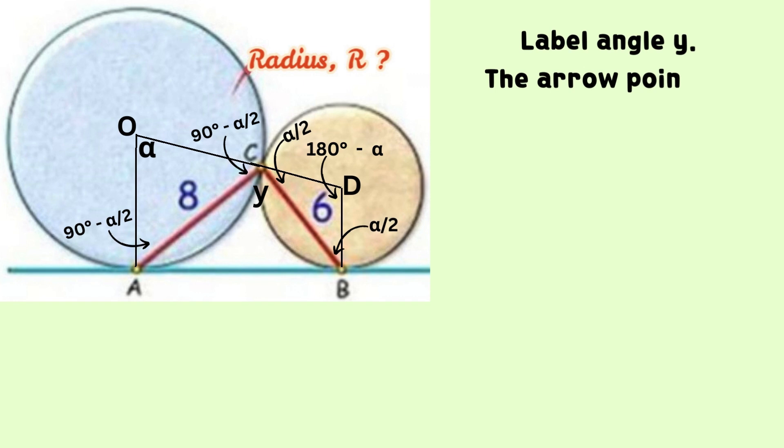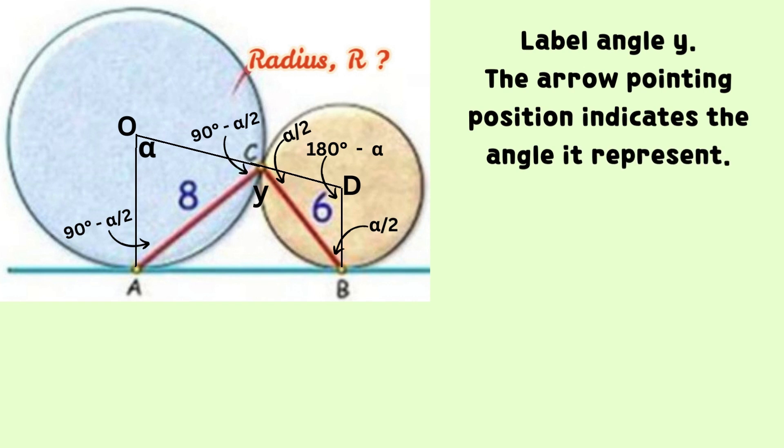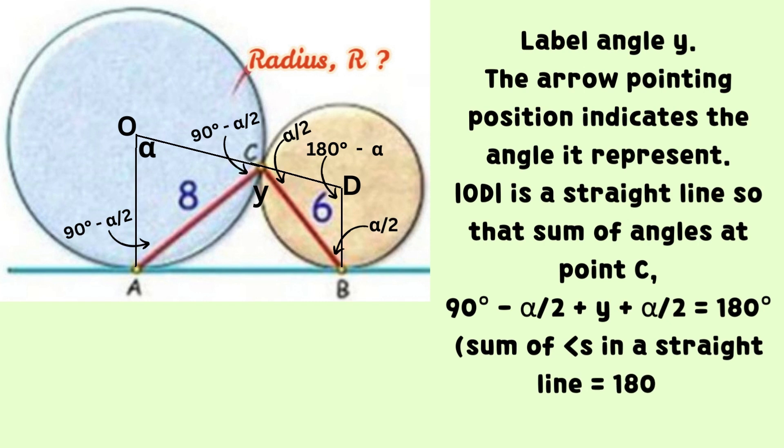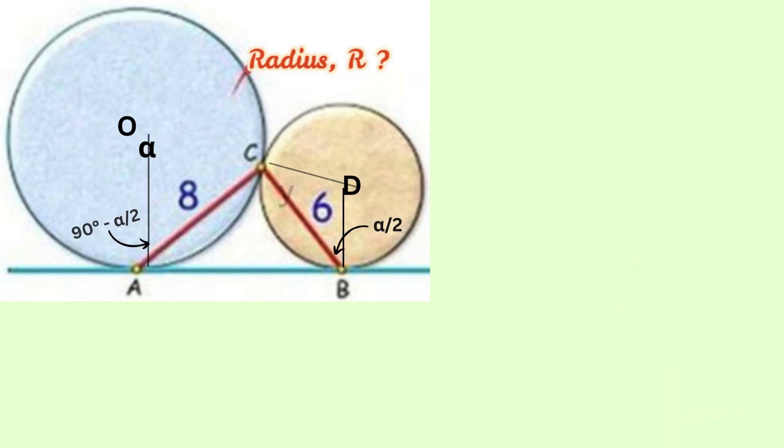The arrow pointing position indicates the angle it represents. Label angle ACB equals to Y. Line OD is a straight line so that sum of angles at point C is 90 degrees minus alpha divided by 2 plus Y plus alpha divided by 2 equals to 180 degrees. It is because sum of angles in a straight line equals to 180 degrees. Therefore, Y equals to 90 degrees.